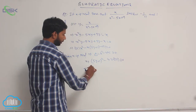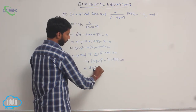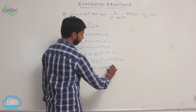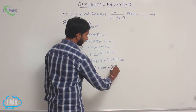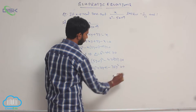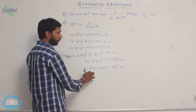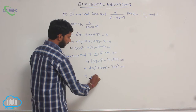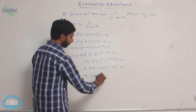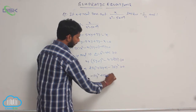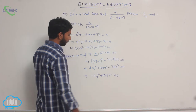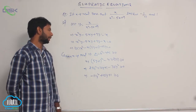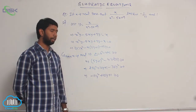Let us expand the terms: 25y² + 10y + 1 - 36y² ≥ 0. Here 25y² - 36y² = -11y², so -11y² + 10y + 1 ≥ 0.